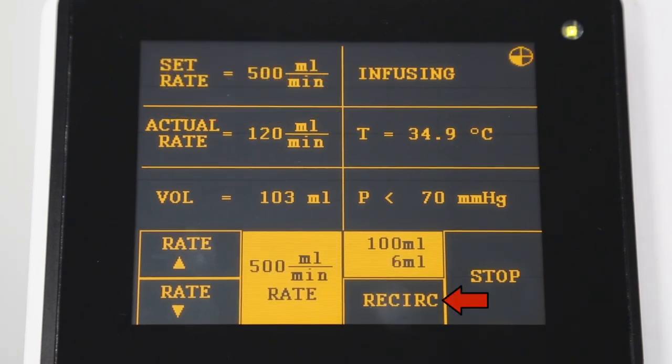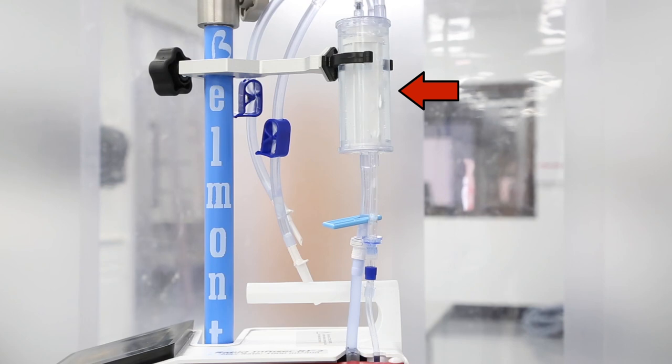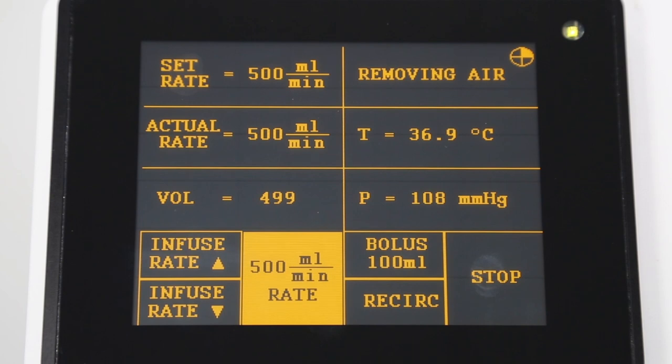Pressing the recirculation key will recirculate fluid through the reservoir and disposable circuit. This feature is used to warm and mix fluids and will automatically stop after 5 minutes. As fluids are warmed, gases are formed. The Belmont Rapid Infuser RI2 will trap these gases within the system and automatically purge them into the atmosphere. When this occurs, removing air will be briefly displayed on the screen and you may see bubbles escape through the recirculation or vent line.